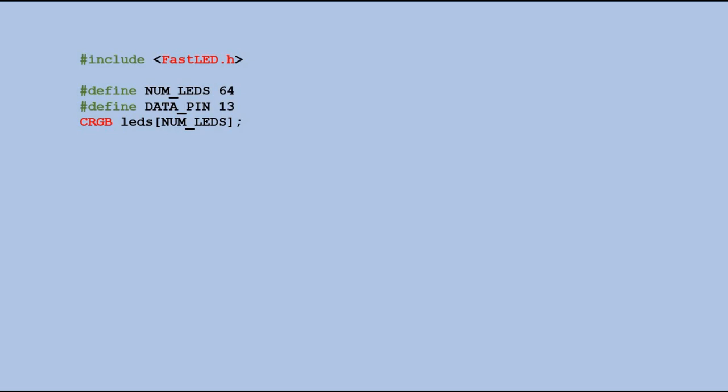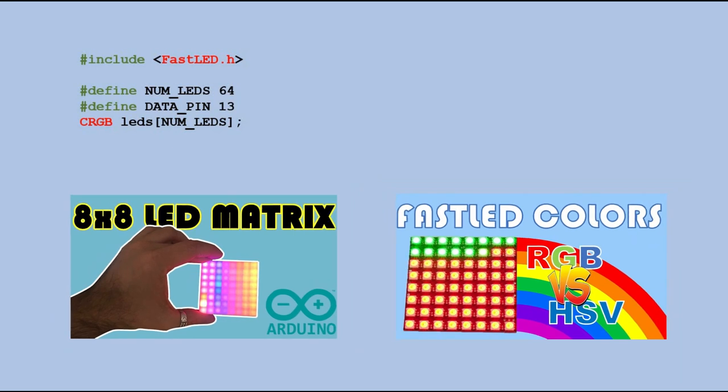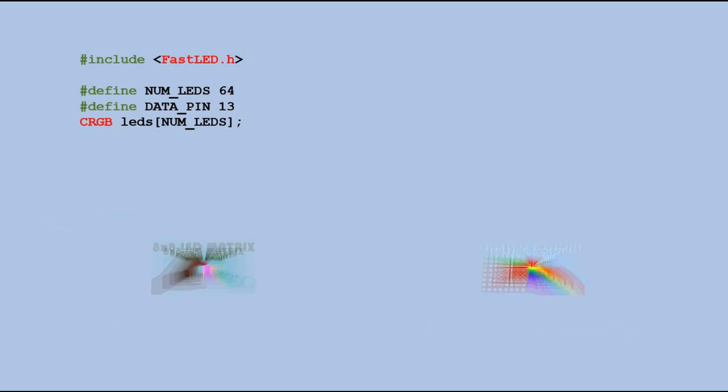Then also declaring the table of 64 CRGB objects representing 64 LEDs. If you are not familiar with using individually controlled LED strips or matrices, you can check those two videos of mine. Finally we declare the FastLED object in the setup function.